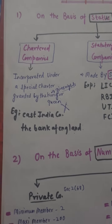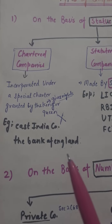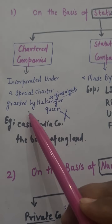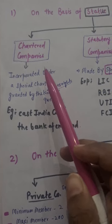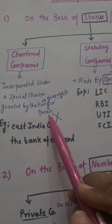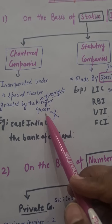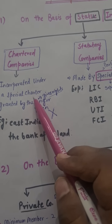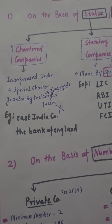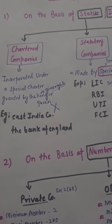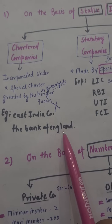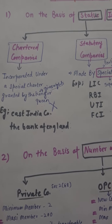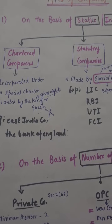First we will see chartered companies. Chartered companies are incorporated under a special charter granted by the king or queen — called the royal charter. For example, East India Company and the Bank of England. But now the concept of chartered companies has been finished; chartered companies are not covered under the Companies Act.